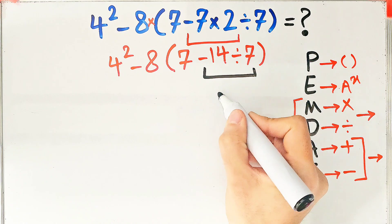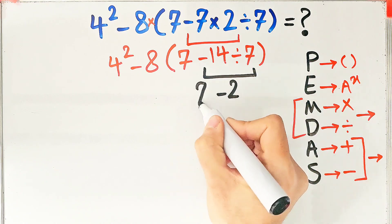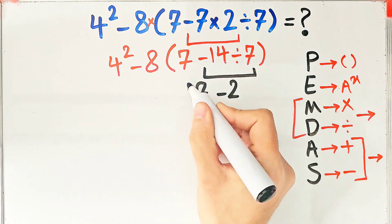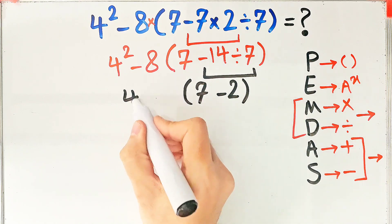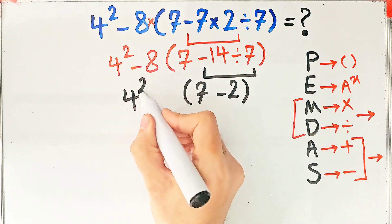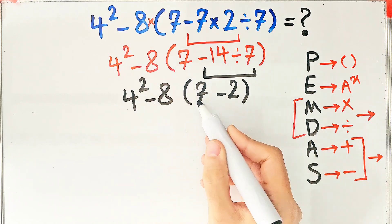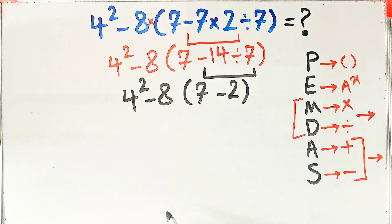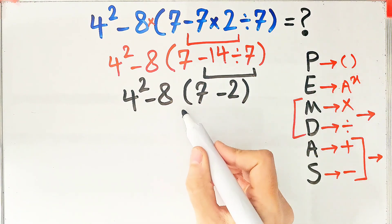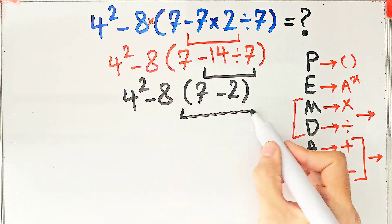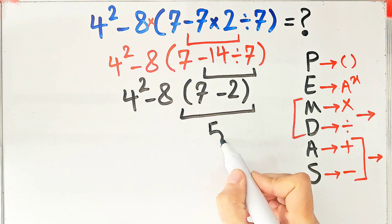Now we have seven minus two inside the parenthesis. We simplify the parenthesis: seven minus two equals five. Now we have four to the power of two, minus eight, then times five.